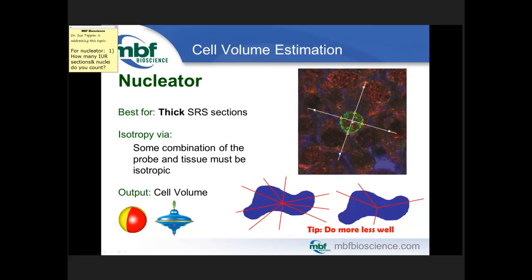You combine the nucleator probe with the optical fractionator — that's an excellent way to use this probe. When you set up the nucleator, aim for approximately four radii per object. That tends to be a good middle ground between doing enough work per cell and balancing how many cells you need to estimate. To throw the rays, click anywhere inside the cell and click where the probe radii intersect with the boundary. Between 100 and 150 cells is recommended per population per animal.